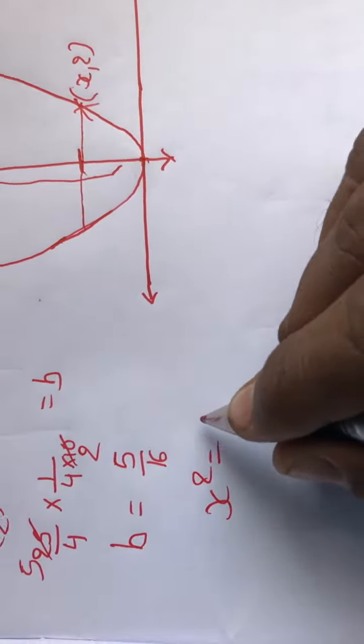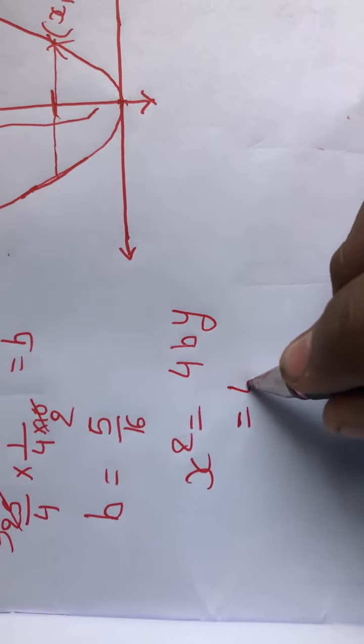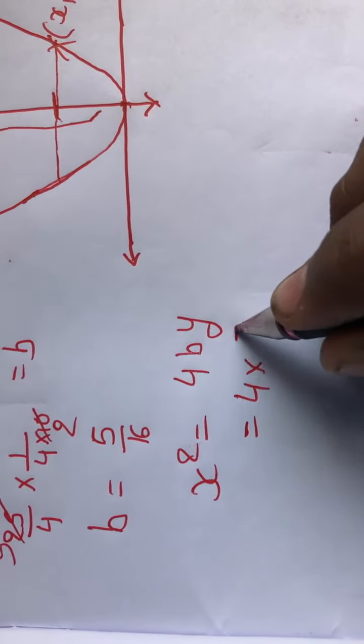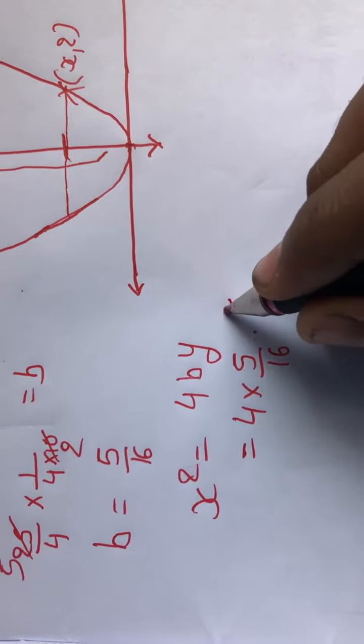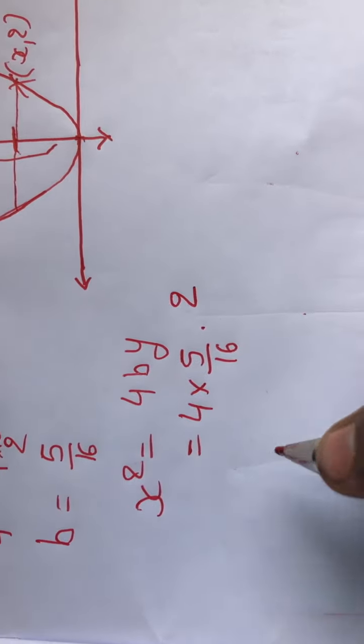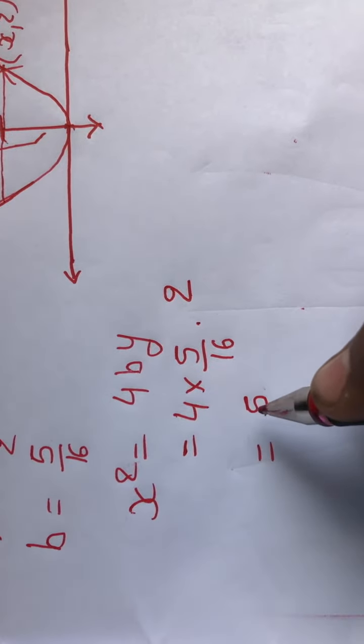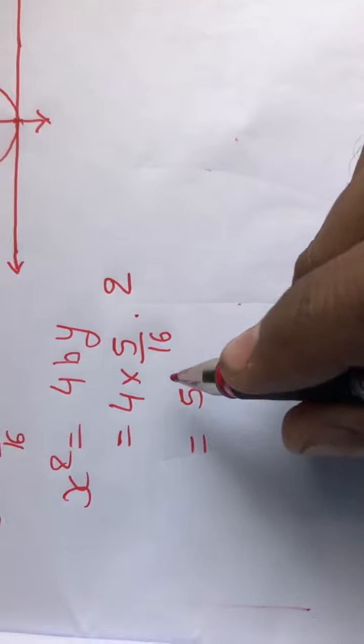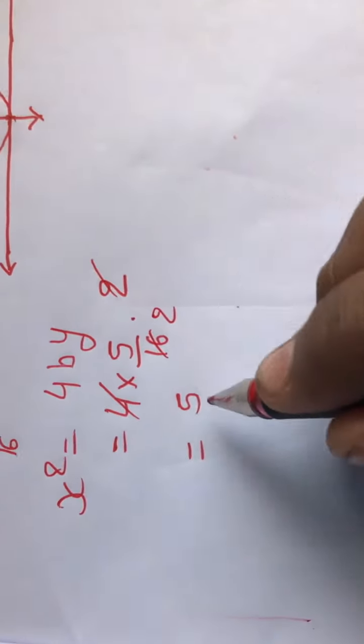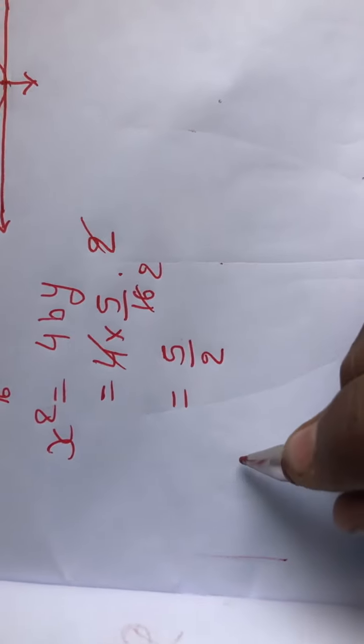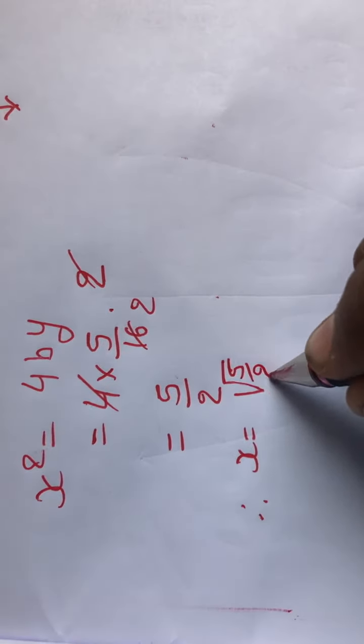x square equals 4 b y. b is 5 upon 16 and y is given as 2. So x square equals 4 times 5 upon 16... x square will be 5 by 2, so x will be under root 5 by 2.